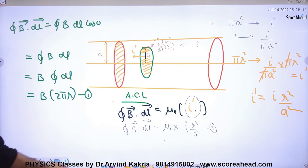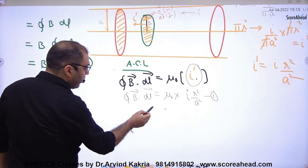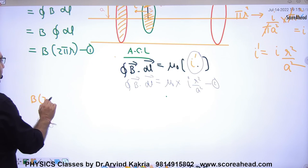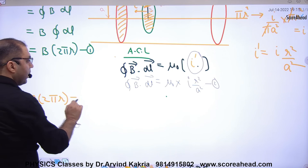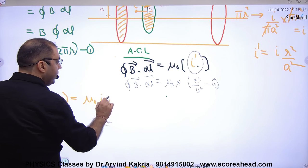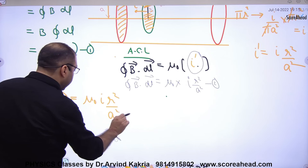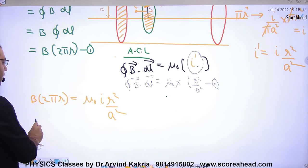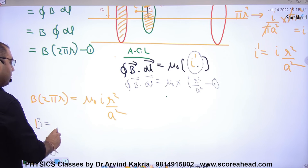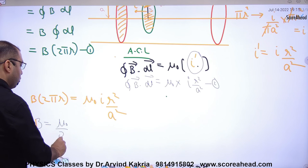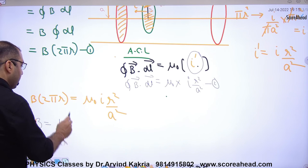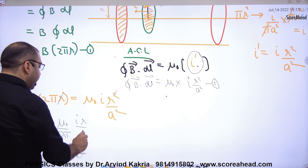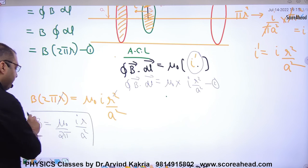Substituting into Ampere's law: ∮B·dl = μ₀ × I'. So B × 2πr = μ₀ × I × r²/A². Equating equation 1 and equation 2 and solving: B = μ₀/2π × Ir/A², which can be written as μ₀/4π × 2Ir/A². This is the magnetic field at a point inside the current-carrying wire.